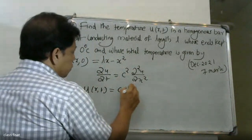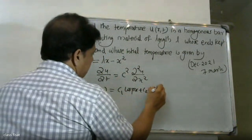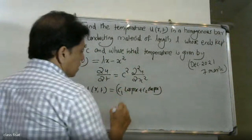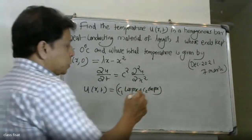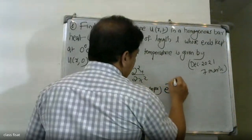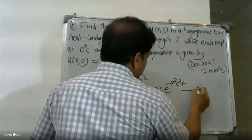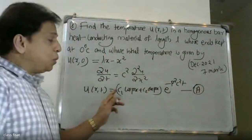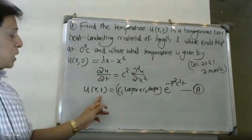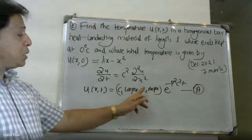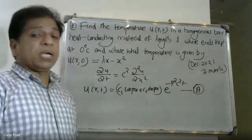The most suitable solution of the heat equation is: u(x,t) = (c1·cos(px) + c2·sin(px)) · e^(−p²c²t). This is the general form of the solution to the heat equation ∂u/∂t = c²·∂²u/∂x².